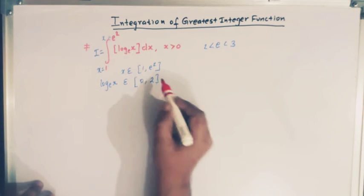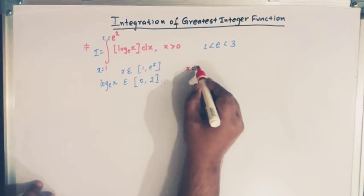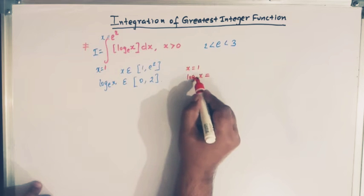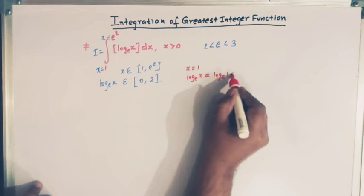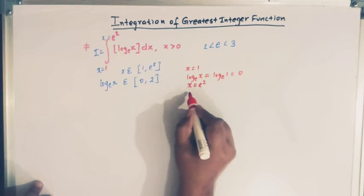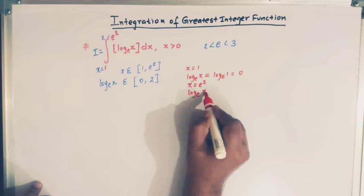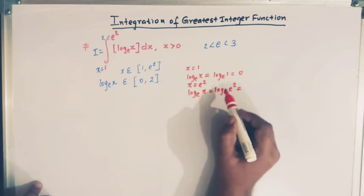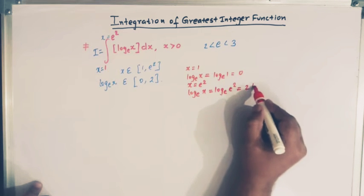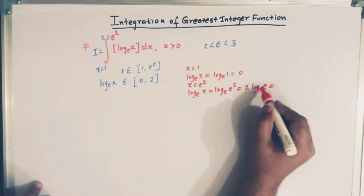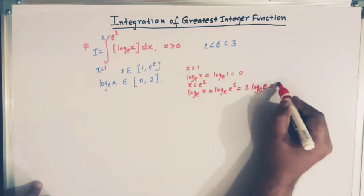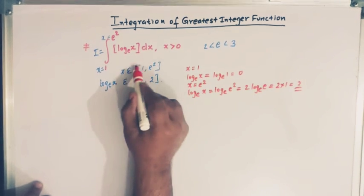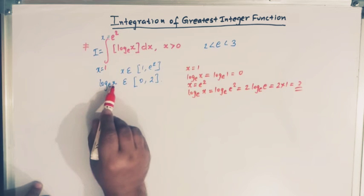When x is equal to 1, the value of log base e of x is log base e of 1, which is 0. When x is e², then log base e of e² equals 2 log base e of e, and since log base e of e is 1, we have 2. So when x belongs to this interval, log base e of x belongs to the interval 0 to 2.